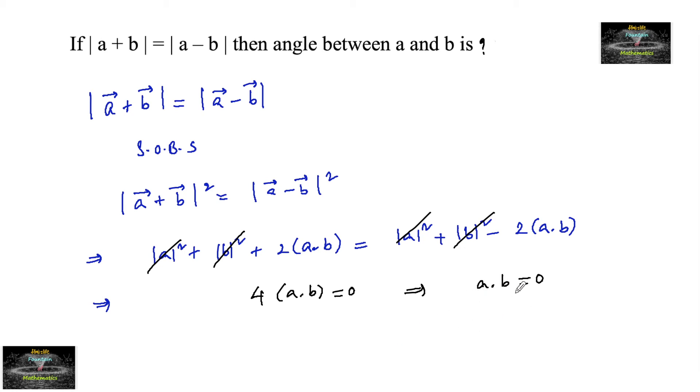The dot product of two vectors is zero, which implies vector a is perpendicular to vector b. Therefore, the angle between vector a and vector b is 90 degrees or π/2.